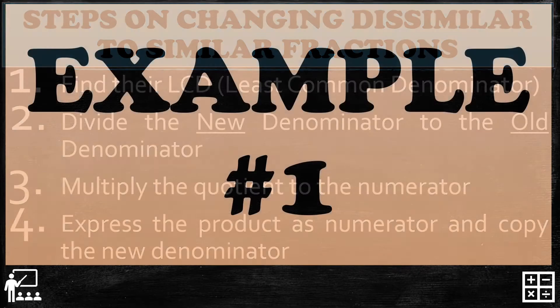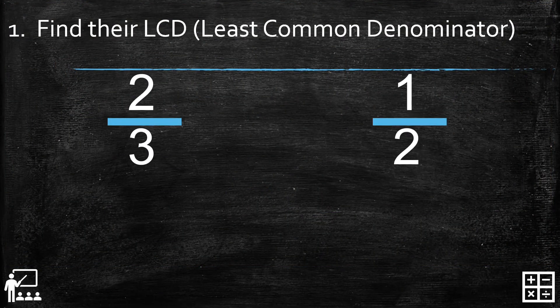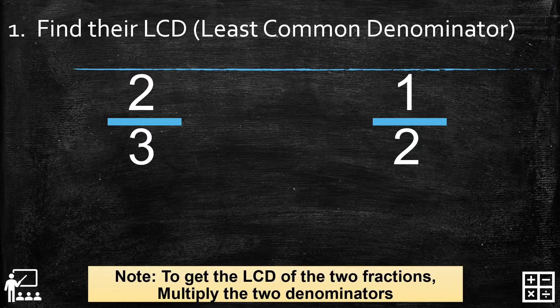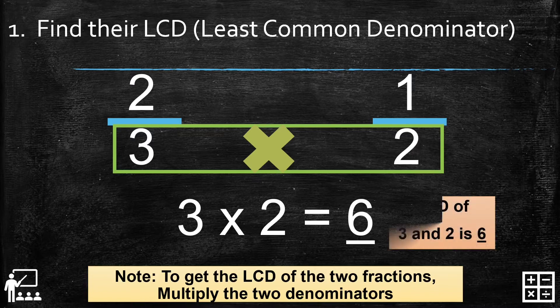So let's try. Example number one: I have here 2 over 3 and 1 over 2. The two fractions are dissimilar fractions because the denominators are not the same. To get the LCD of the two fractions, multiply the two denominators. The denominators are 3 and 2, so 3 times 2 gives you 6. The LCD of 3 and 2 is 6, and 6 is our new denominator.